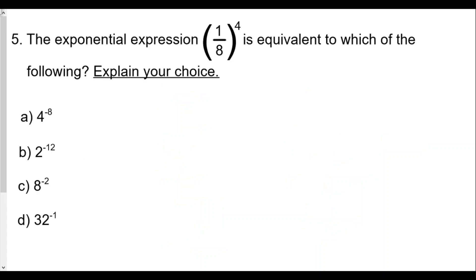Question five: the exponential expression one over eight to the fourth power is equivalent to which of the following — explain your choice. We probably want to rewrite one over eight in exponential form, since all the choices are in exponential form. The choices include base eight, base two, base four, and base 32.